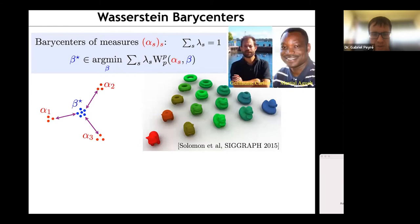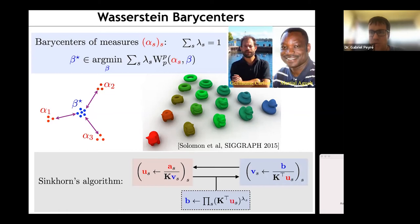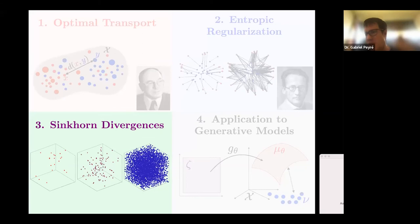A few extensions: one important one is the Wasserstein barycenter — given several input measures, you compute an average distribution. This was introduced in very nice work by Guillaume Carlier and Martial Agueh, who unfortunately passed away from cancer a few years ago, a major loss to the field. A similar Sinkhorn-type algorithm can compute barycenters. We also worked on unbalanced optimal transport, which allows variation in the total mass.